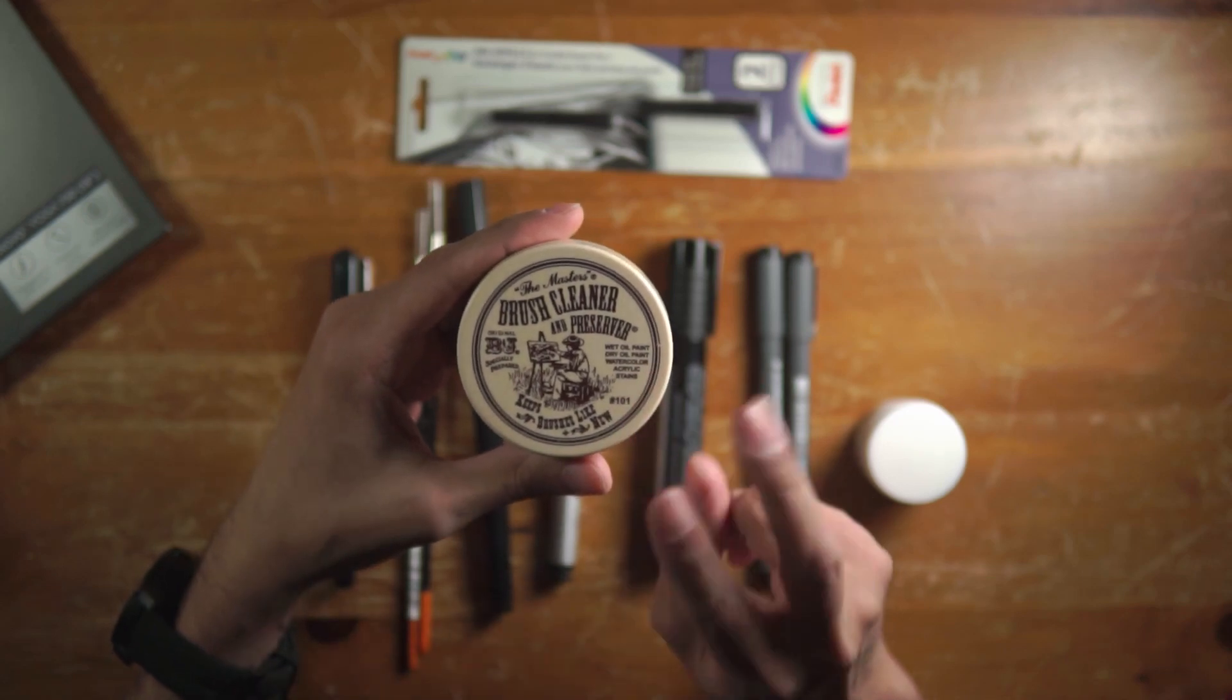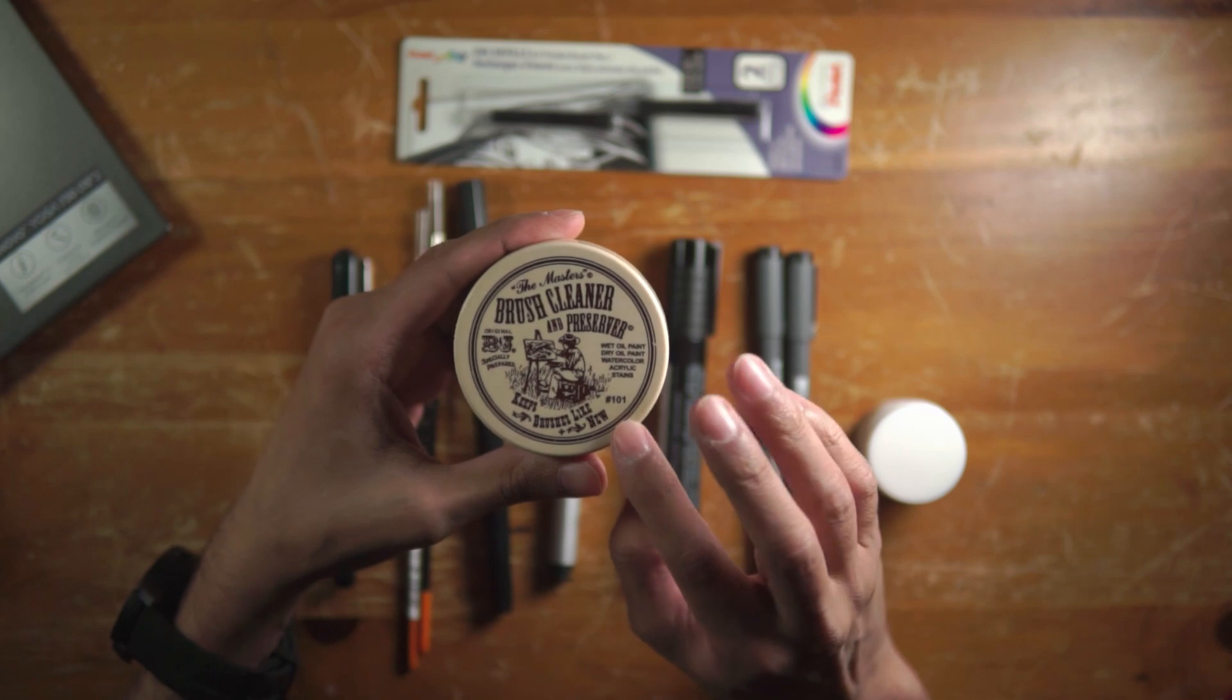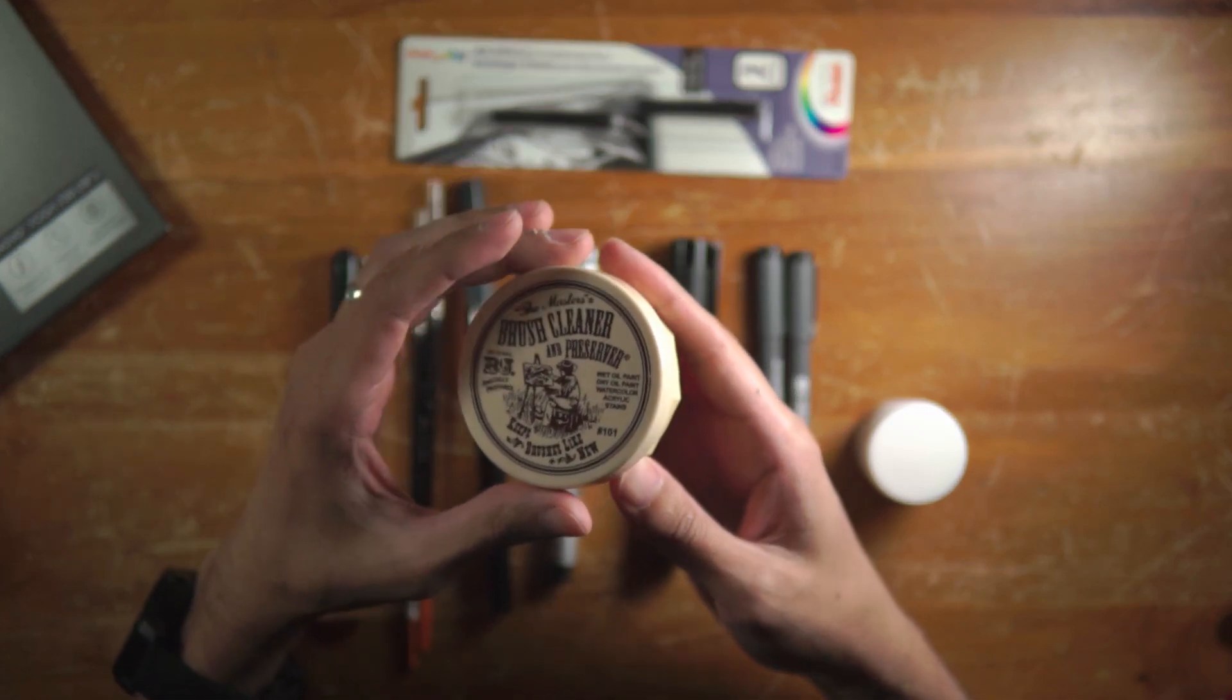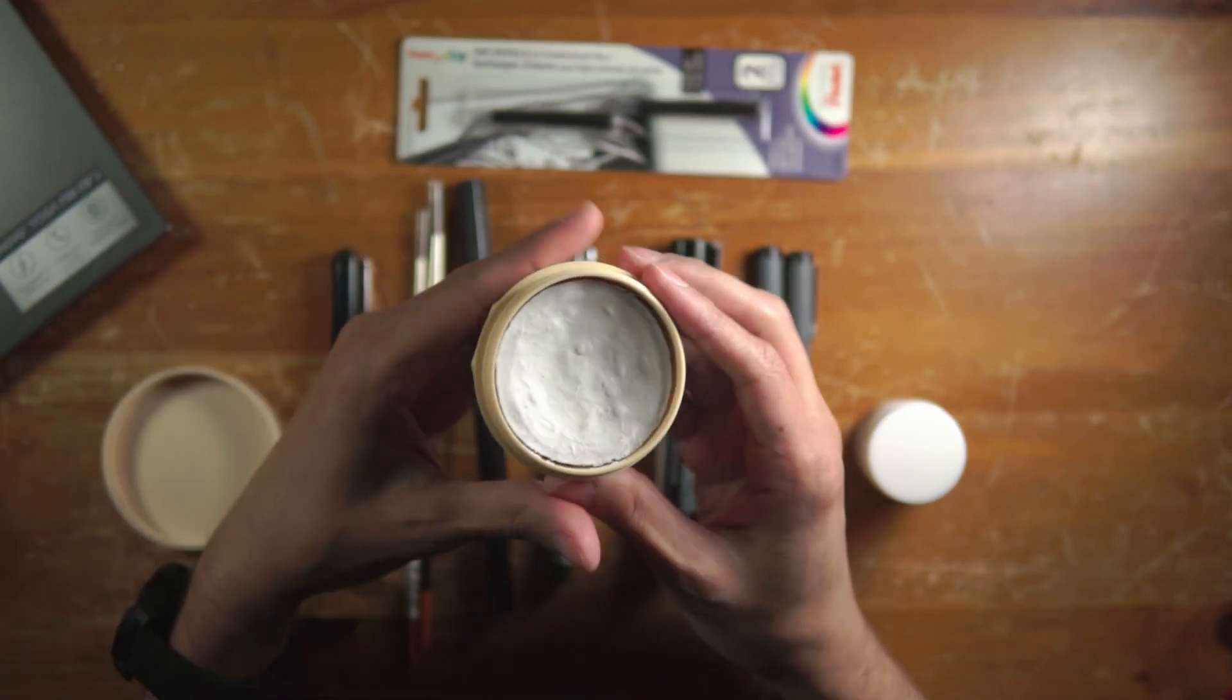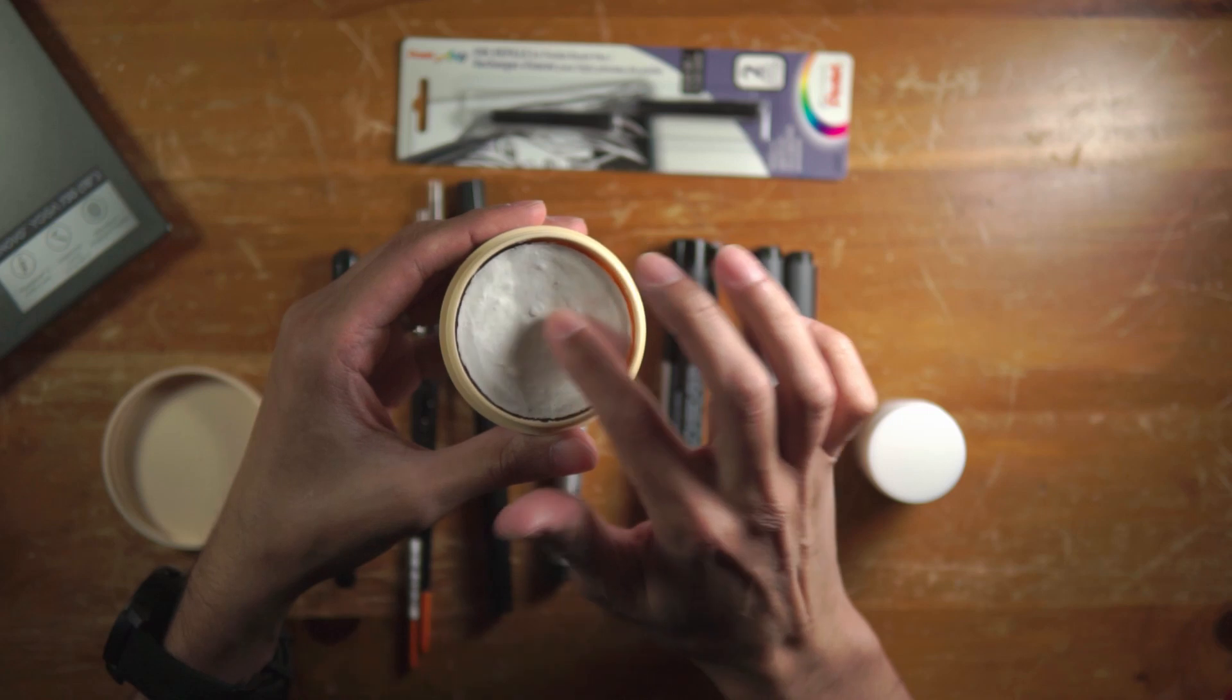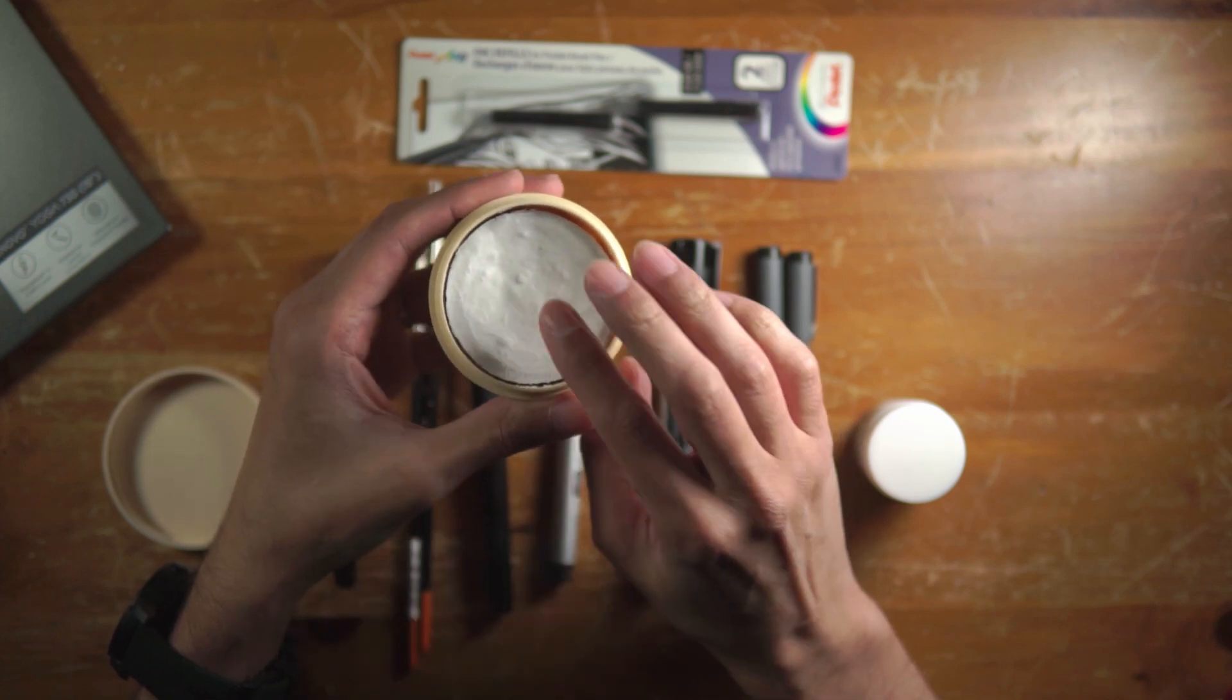And it basically does two things. It helps clean your brush when you're done with them and it helps to maintain your brush in really top shape. So it basically conditions the brush right, so that it will last you longer than if you wouldn't use this. So it's really simple to use. It's like this paste and it's pretty much dry to the touch. And what you do is you wet the brush tip and then you bring it in here and you start working this into the brush and then you clean the brush and you do it a couple of times so your brush is clean.